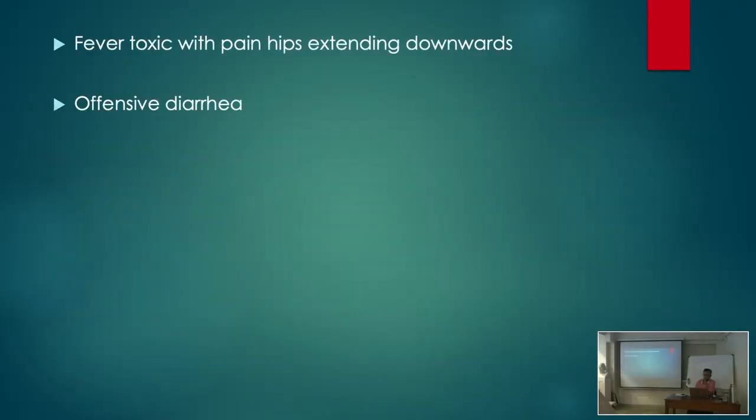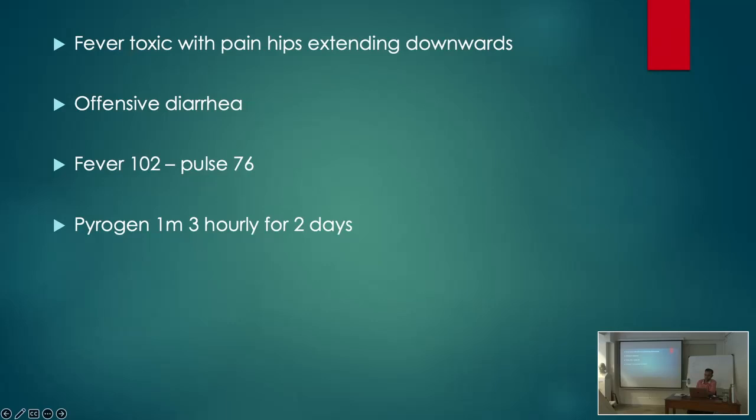Fever toxic with pain in the hips extending downwards. This is the symptom of Pyrogen in typhoid fever which is given in Bhanja, which I have read and I have got to know from other teachers also. Offensive diarrhea. Offensiveness is a trait of Pyrogen. Now this was interesting, fever is 102 and pulse is 76, pulse out of proportion to the temperature. Pyrogen 1M, 3 hourly for 2 days.